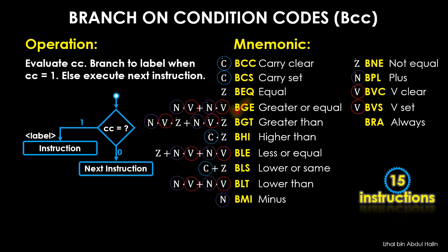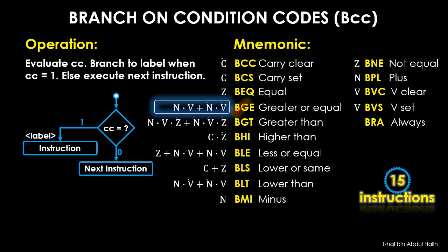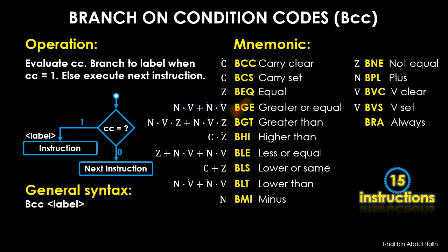The flags are C, N, V, and Z. As an example, for the BGE instruction the 68k will branch when its condition code — given by the boolean expression (N AND V) OR (N-bar AND V-bar) — results in a logic one. It will not branch otherwise. The general syntax for all BCC instructions is: BCC label. A label is a variable that holds the address of the instruction the 68k knows where to branch to.